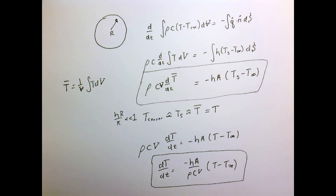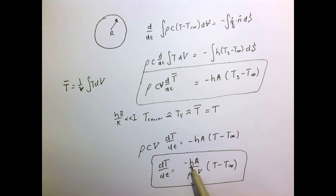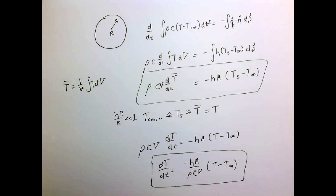In the limit of small Biot number, we have a simple first-order differential equation telling us the temperature of the object cools exponentially. The time constant is given by HA over rho*Cv, which has units of inverse time. This parameter sets the time constant for the system, telling us how long the object will cool, and that it cools as a simple exponential.